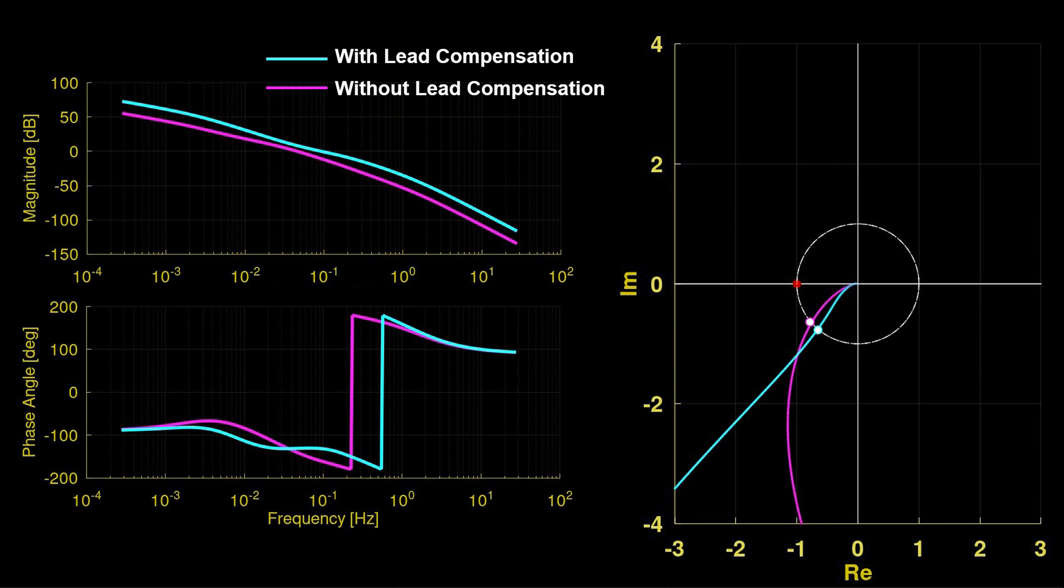As designed, the compensator adds phase to the loop gain where it is important, near the loop gain crossover frequency. For the original system, the crossover is at 0.046 hertz. For the compensated system, 0.092 hertz, which leads to phase angles of approximately minus 131 and minus 140. And this is consistent with the additional phase margin of the lead compensated loop gain.